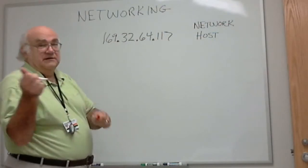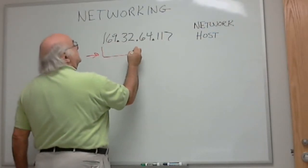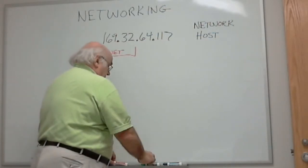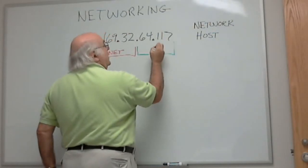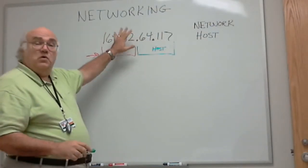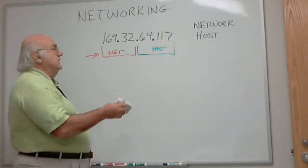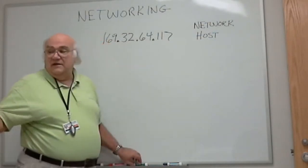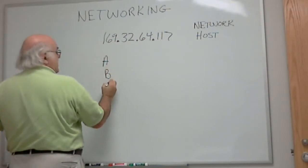The network portion of this address always comes from the left. So whatever portion is network from the left, whatever is left is host. Now I just arbitrarily divided it into two bytes each, or two octets, or two dotted decimal numbers each. But in the scheme of things, historically, classfully - and all routers still are inherently classful - we had three classes of addressing: class A, class B, and class C.